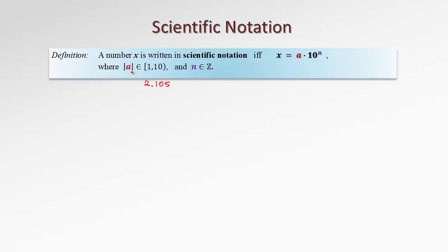Notice that we are taking absolute value of a, which means a by itself could be either positive or negative — that's okay. However, what's important is that we take one non-zero digit and place a dot, then fix this situation by multiplying by a power of 10. In scientific notation, a is called the coefficient, and we multiply this coefficient by the power of 10 — 10 is the base — with a certain exponent n. The exponent comes from integers.